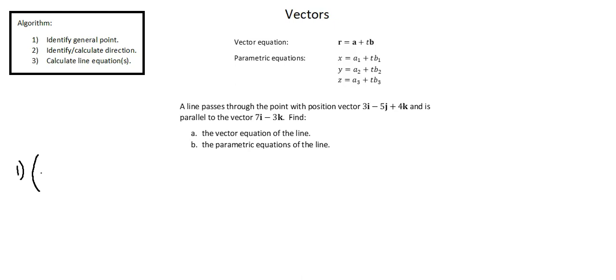So I'll write in component form in a column matrix the x, y, z components of 3, negative 5, and 4. This is the general point that we'll work with in our vector equation.